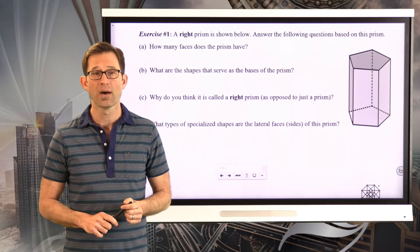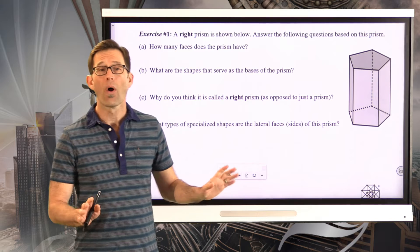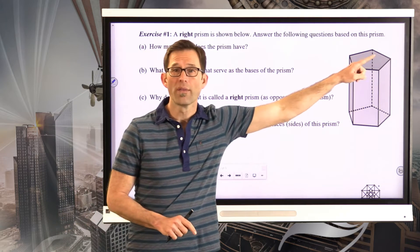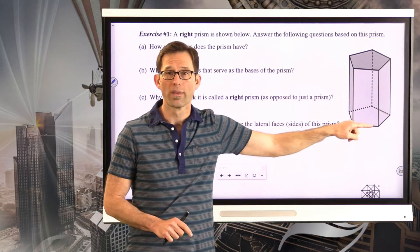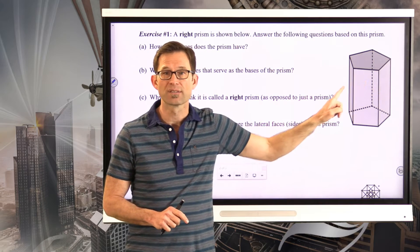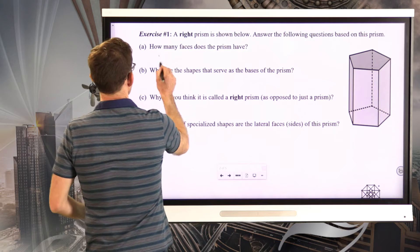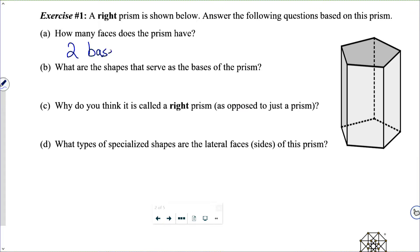We'll always have two bases — one on top, one on bottom — so that's two. Then we have five lateral faces. Two bases plus five lateral faces gives us seven faces total.